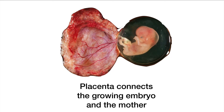This is what it looks like inside — it's part of the uterus and it is filled with blood vessels. Those blood vessels allow the exchange between the growing embryo and the mother, and they connect to the umbilical cord.